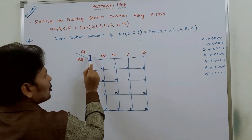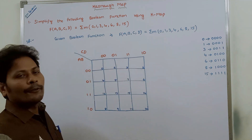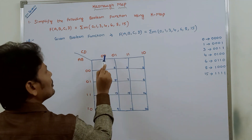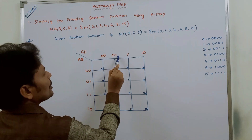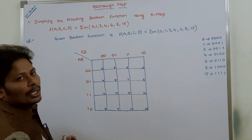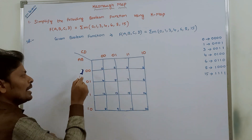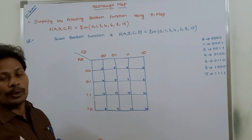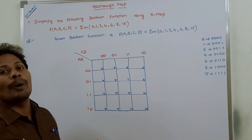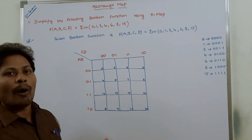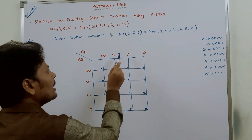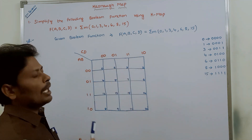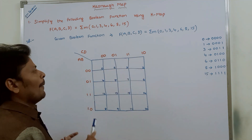These 2 variables can also have 4 possibilities: 00, 01, 11, 10. Here we must follow Grey code compulsorily; otherwise you will get the wrong answer. Here also we have to follow the Grey code.